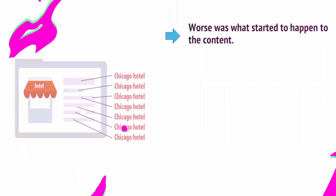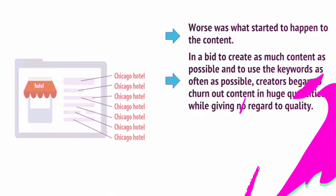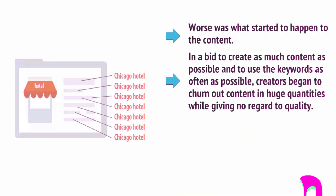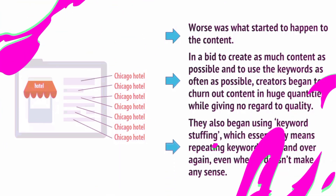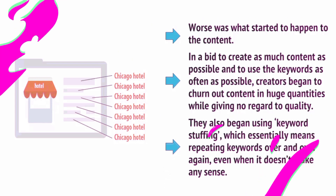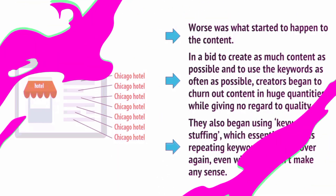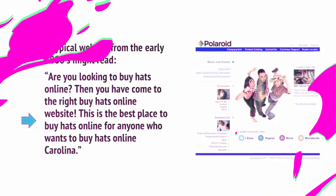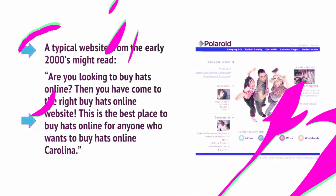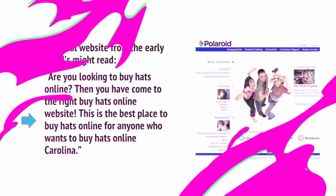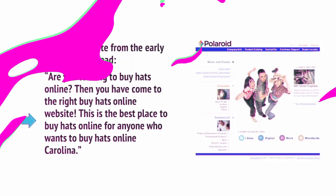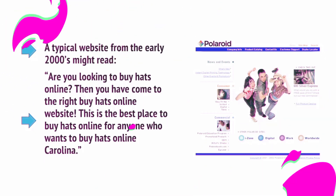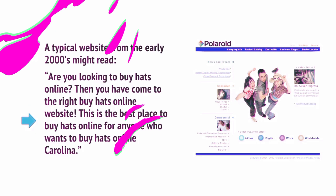Worse was what started to happen to content. In a bid to create as much content as possible and use the keywords as often as possible, creators began to churn out content in huge quantities while giving no regard to quality. They also began using keyword stuffing, which essentially means repeating keywords over and over again, even when it doesn't make any sense. A typical website from the early 2000s might read: 'Are you looking to buy hats online? Then you have come to the right buy hats online website. This is the best place to buy hats online for anyone who wants to buy hats online.' As you can see, this content is completely nonsensical and will be highly off-putting for any real visitors looking to make a purchase.